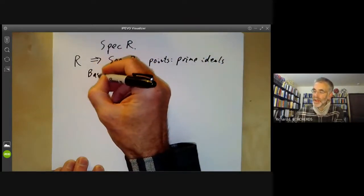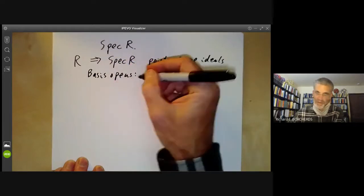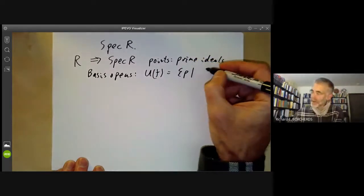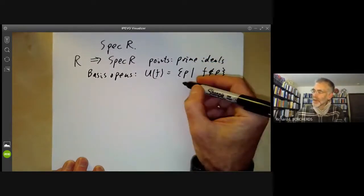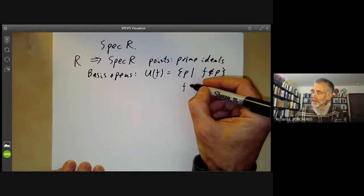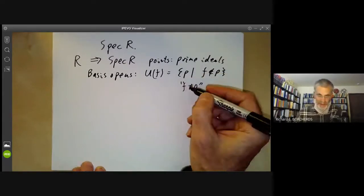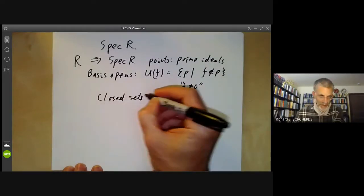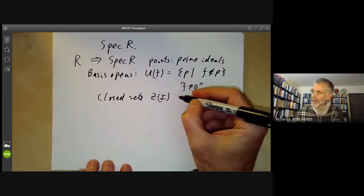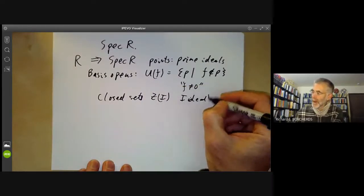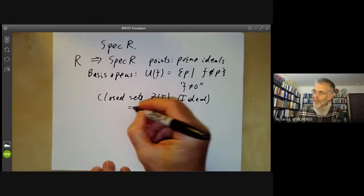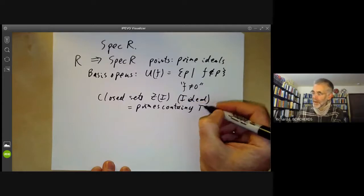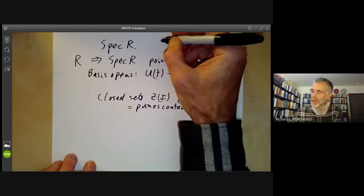You can either define it as a basis of open sets consisting of the sets U(f), which are the set of prime ideals such that f is not in the prime ideal. You can think of these informally as being the places where f is not zero, although that shouldn't be taken too seriously. Alternatively, you can define it by saying the closed sets are the set Z(i), where i is an ideal — this is just the primes containing i. So this is called the Zariski topology on the spectrum of R.